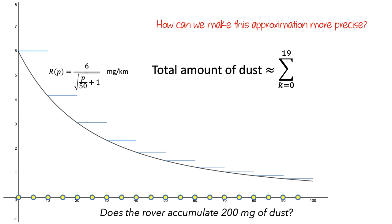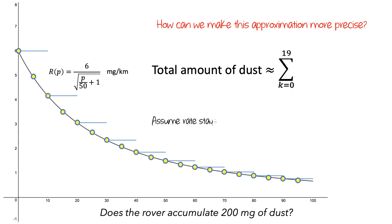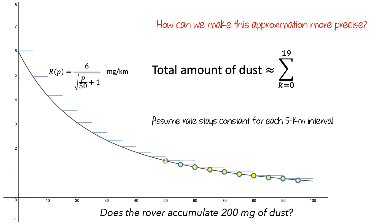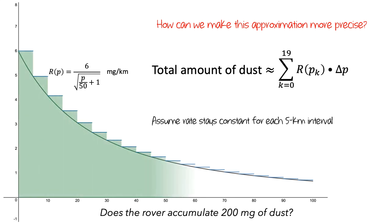Then we need to find the rate of dust accumulation at the start of each interval, and we would again assume that the rate stays constant for each 5-kilometer interval, which will make our graph look like this. We're using the rate of accumulation at the start of each interval. Then to find the amount of dust that accumulates in each interval, we multiply the rate of accumulation by the width of the interval, which makes our graph look like this. We'll add up the amounts and this time we'll get 213.8 milligrams of dust.